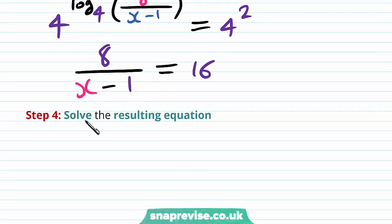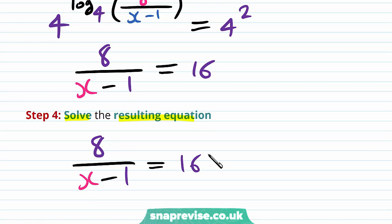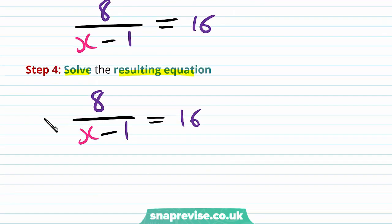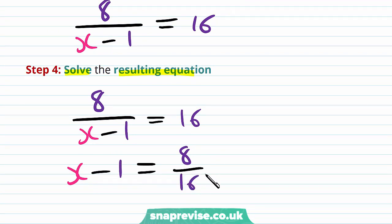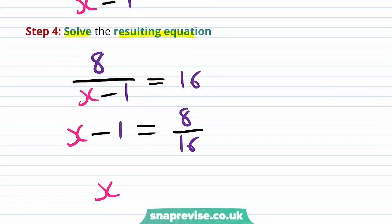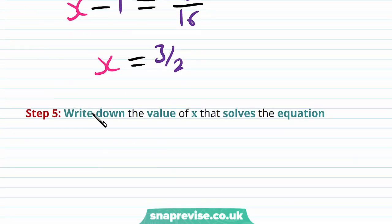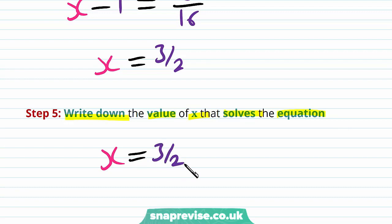Our fourth step is to solve the resulting equation. Our equation is 8 divided by x minus 1 is equal to 16. By rearranging, we have x minus 1 is equal to 8 over 16. 8 over 16 is 1 half, therefore x is going to be equal to 3 over 2. Our last step is to write down the value of x: x is equal to 3 over 2 is the solution of our equation.